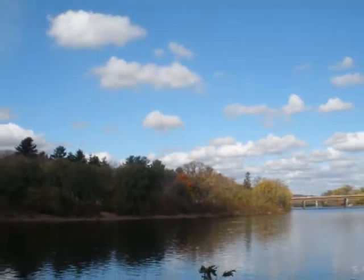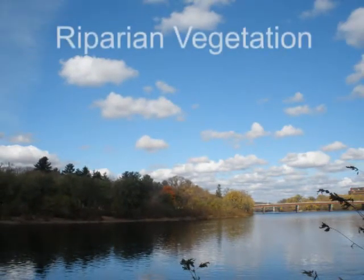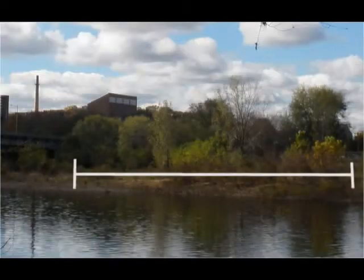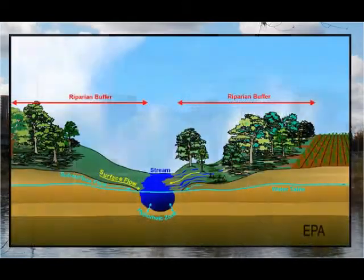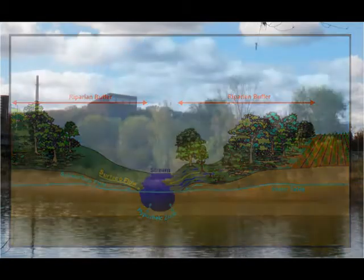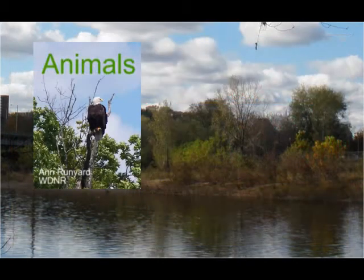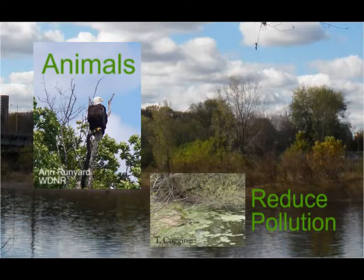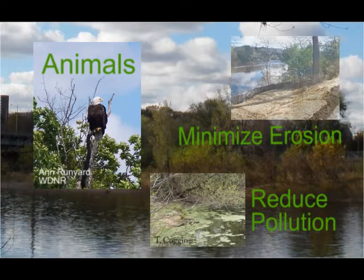The trees, shrubs and other plants that grow along the banks of a river are called riparian vegetation. Areas of riparian vegetation that cover a significant portion of land adjacent to the river can be considered a riparian buffer. Riparian buffers play an important role in maintaining wildlife and water quality by providing shelter for animals, reducing river pollution and minimizing erosion.